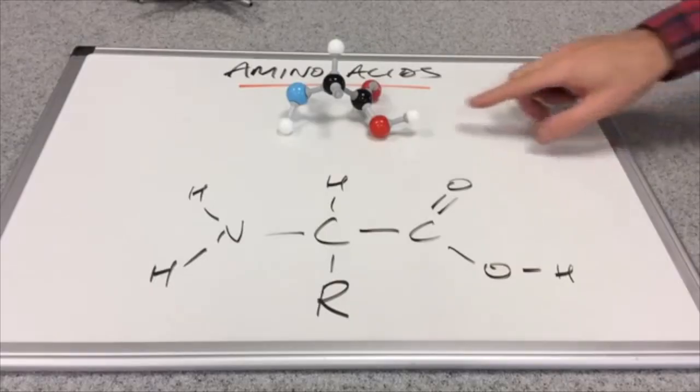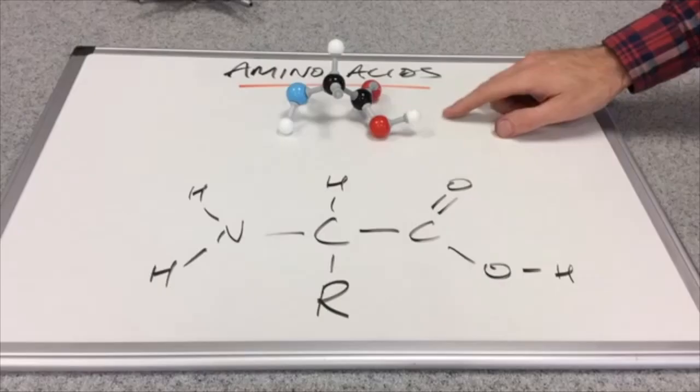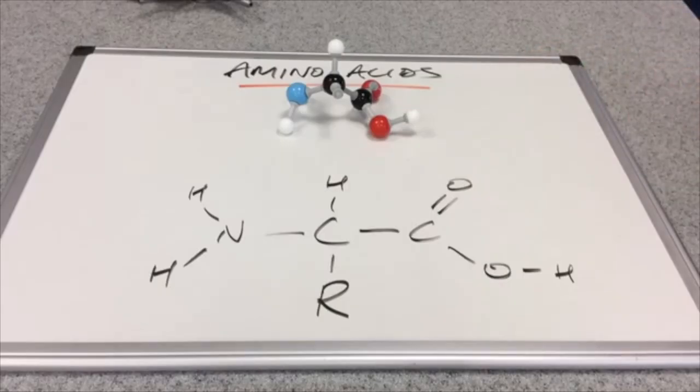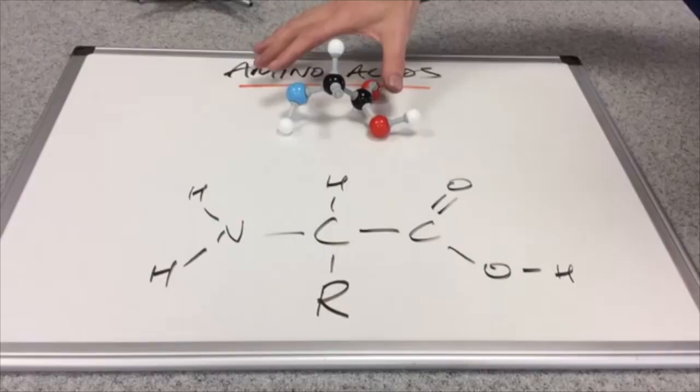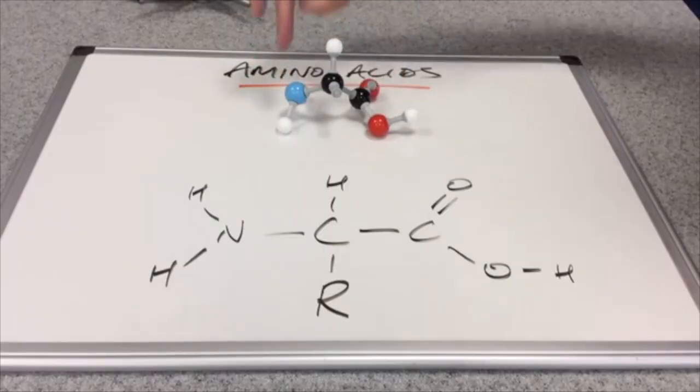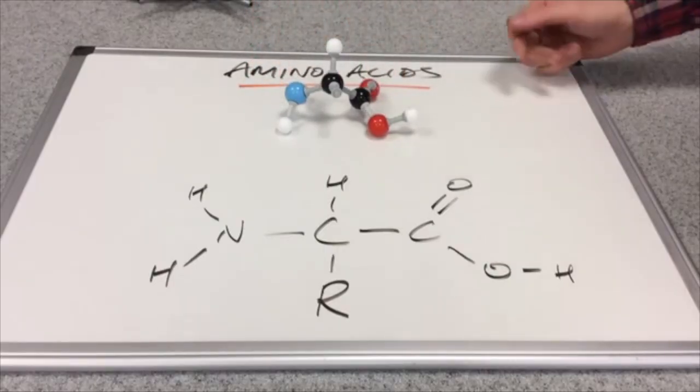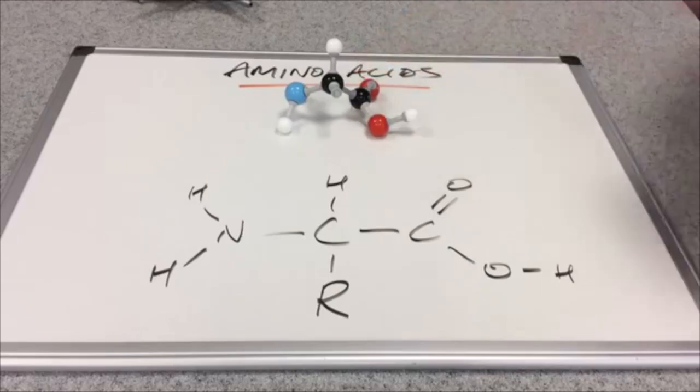Now, the type of amino acids that we need to study at A level are what we call alpha amino acids, and the reason for the alpha is because the two functional groups, the amino and the acid group, they are bonded to the same carbon. And that makes them alpha amino acids.